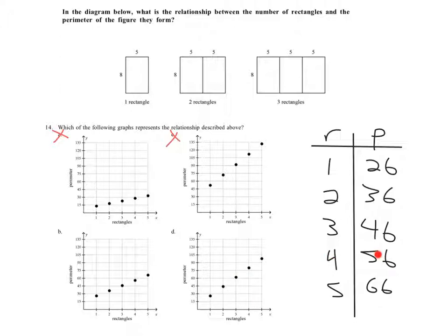At four we should be at 56. Four over here at 56, that's way too high, and at five we should be at 66, and this is already up at like 100, so it's not D. It's not D, and it's B. We're done.